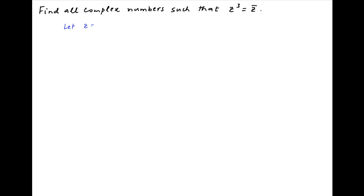Let's start by assuming that z is equal to x plus iy, where x and y are real numbers. Now we are given the equation z cube is equal to the conjugate of z. Substituting the value of z,